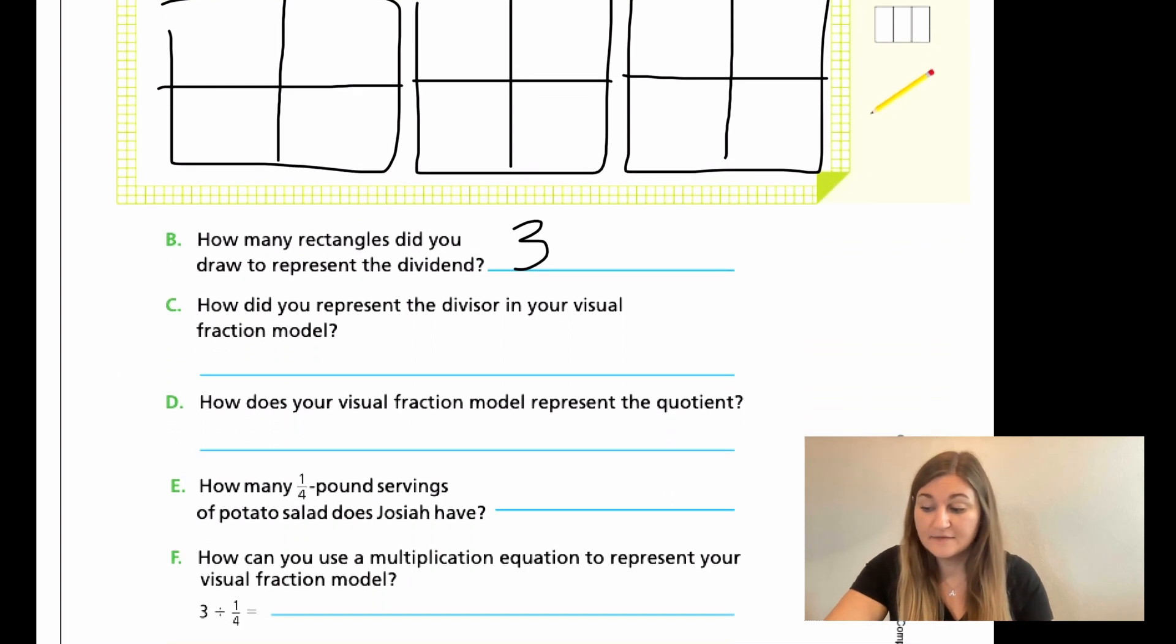Then how did you represent the divisor and your visual fraction model? So our divisor was when we split it into four parts. Remember, because that's the number that we're dividing by. So the one fourth, that's when we made our four parts per rectangle.